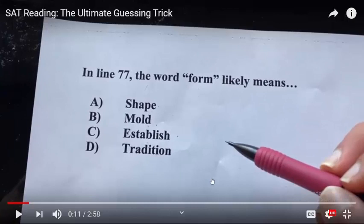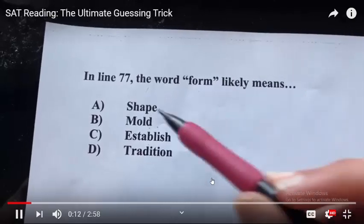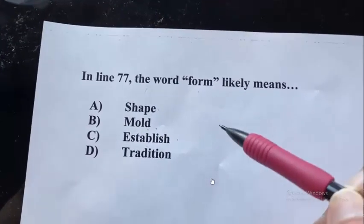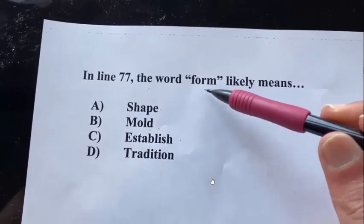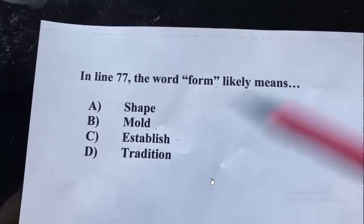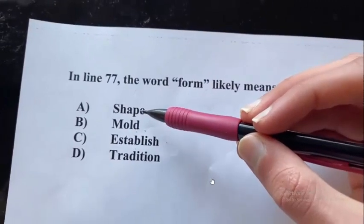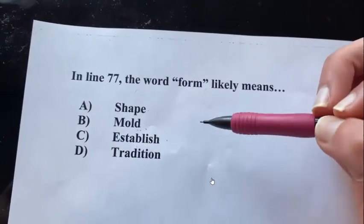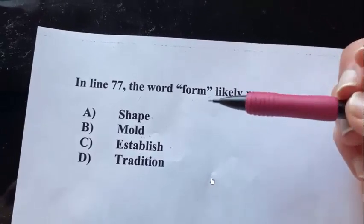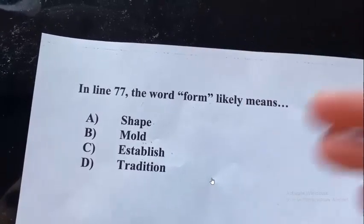So the word 'form' — how can we guess the meaning of these words? Most importantly, we need to guess the meaning and find it through context. But if we don't have a context, we just need to try to guess the meaning without a context. This trick mainly works for vocab-in-context questions — asking us what the word 'form' likely means, but we're not going to read the passage at all.